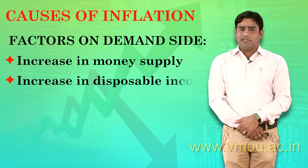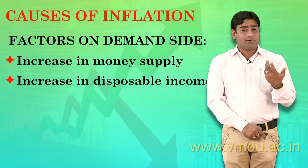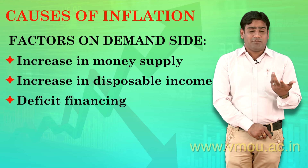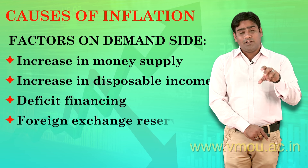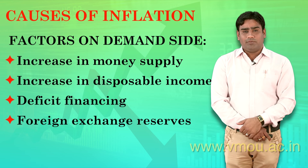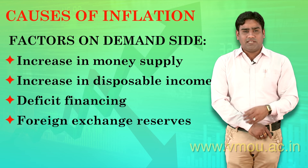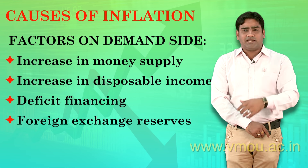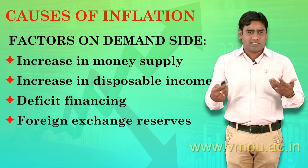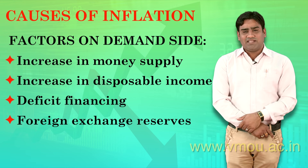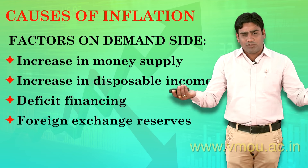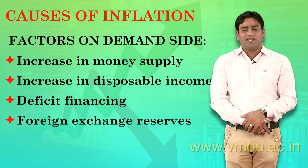On the demand side, there is an increase in money supply. If the money supply is increased, then people will demand more and the price level of commodities will increase. This is also related to disposable income — if people earn more money, they will demand more and prices will rise.